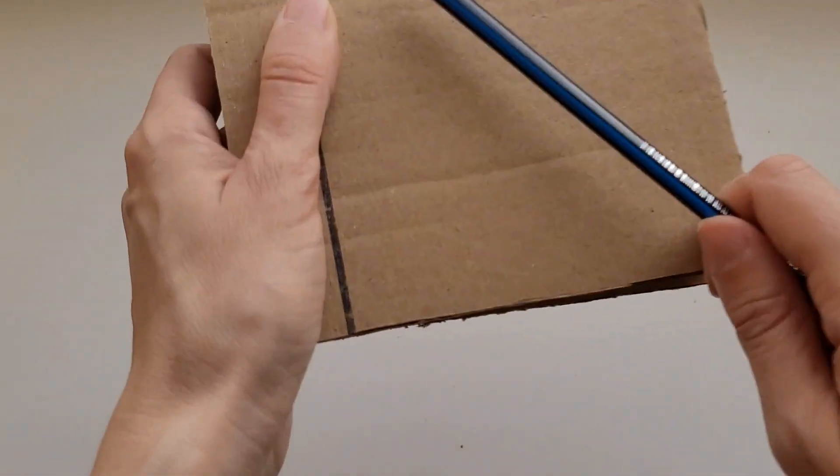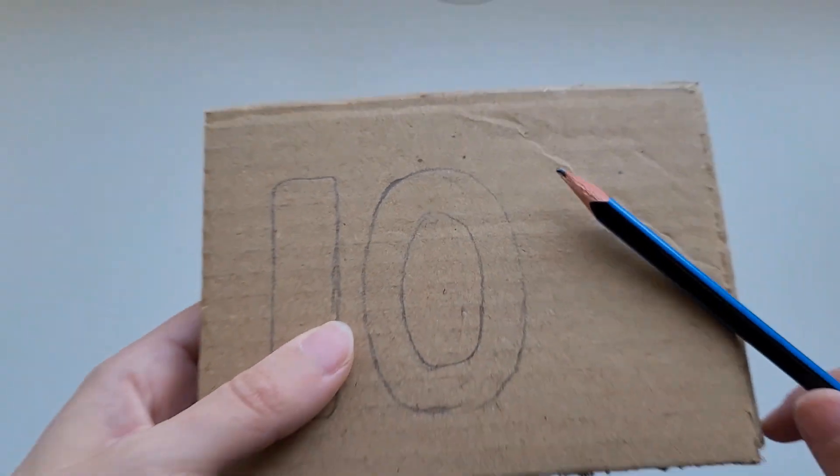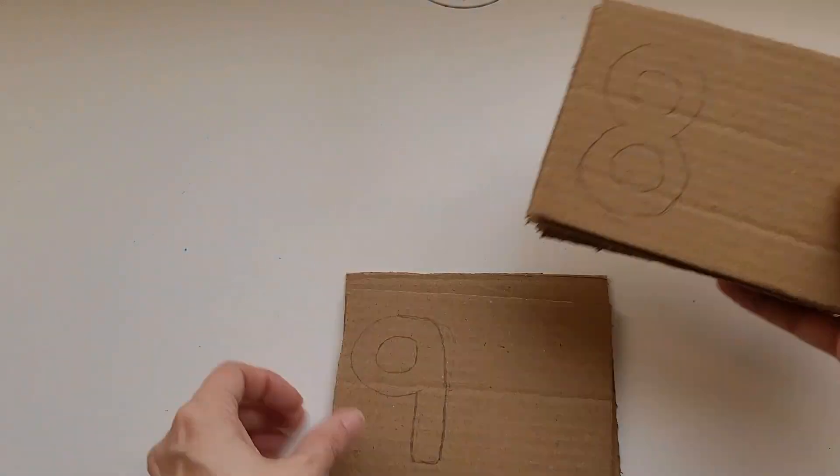We're going to start out by cutting some cardboard into little rectangles. Then we're going to write a number on the side of each rectangle.